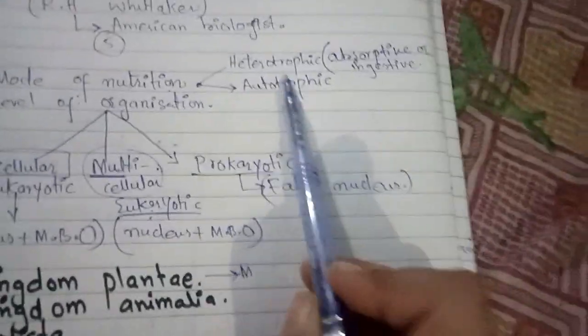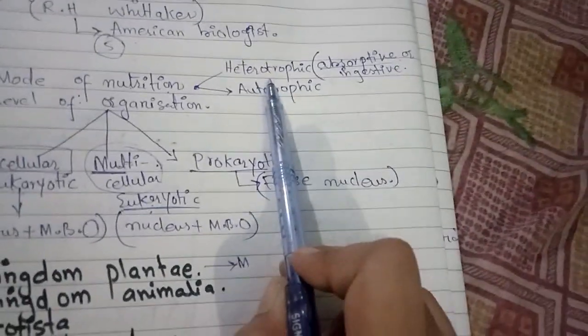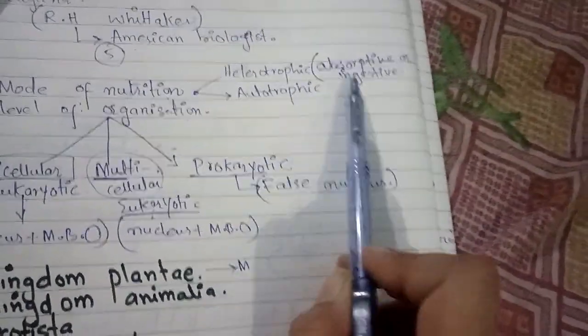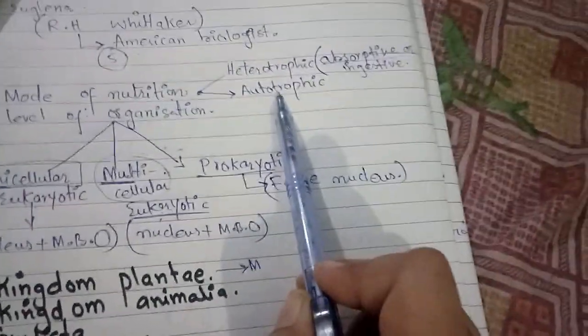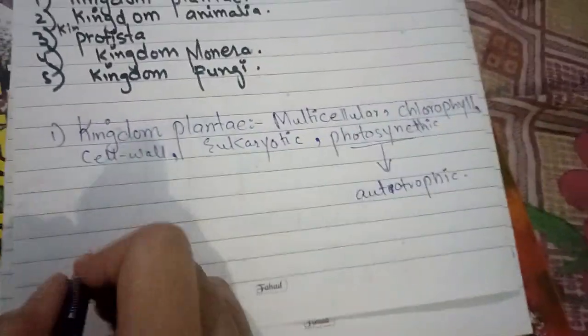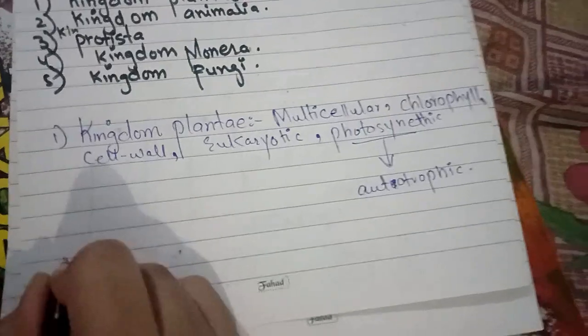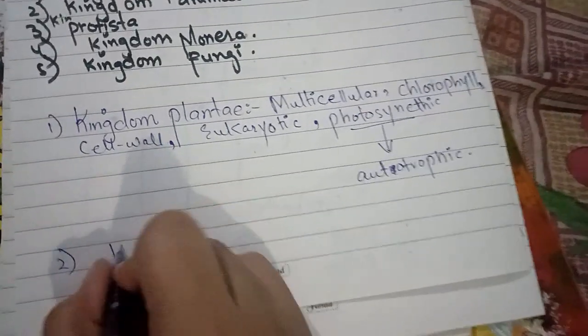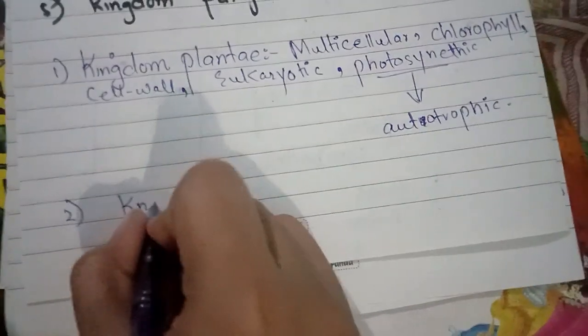The organisms in Kingdom Plantae were autotrophic — meaning they make their own food. They were not heterotrophic. The second kingdom in the system is Kingdom Animalia.